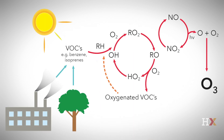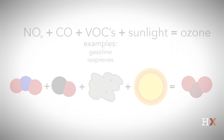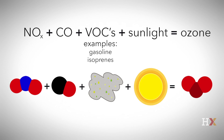Now on to the secondary pollutants. Ozone is created in the atmosphere. The full chemical story is extraordinarily complex, but a simple version involves three precursors: nitrogen oxide, carbon monoxide, and volatile organic compounds. When combined with sunlight, this mixture creates ozone.